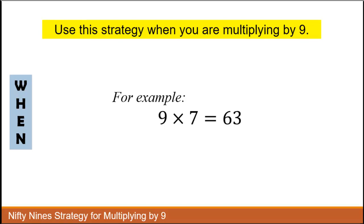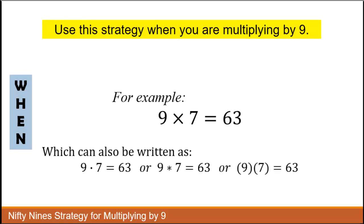For example, I'm going to show you an easy way to find out that 9 times 7 is 63. 9 times 7 equals 63 can be written with the dot for multiplication, the asterisk for multiplication, or it can be written with parentheses. And all these are options on computers and in algebra.